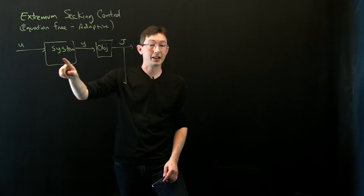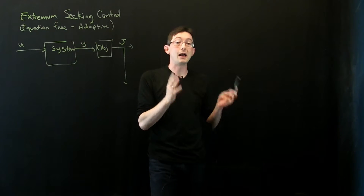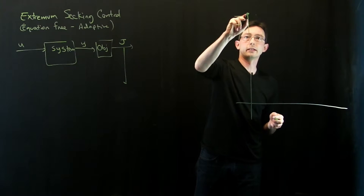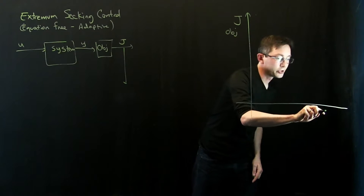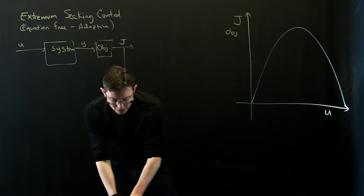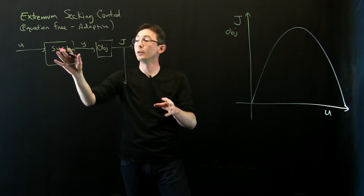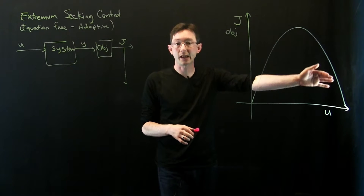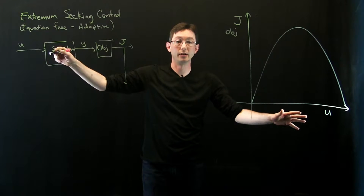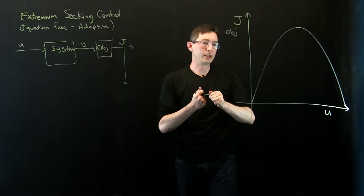The general theory of extremum seeking control applies to dynamical systems and systems with changing parameters, but I'm going to consider a massively oversimplified case to start: my objective function j as a function of u is just a static paraboloid. That means the system dynamics respond instantaneously to a new actuation signal u, giving some measurements y and a corresponding objective function j. So I'm assuming the simplest case: a single global maximum and instantaneous dynamics.